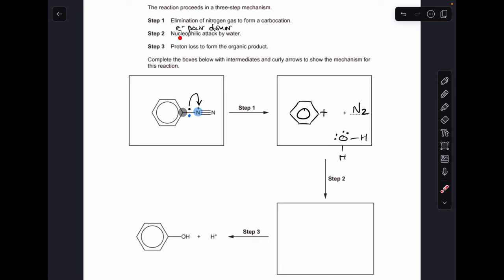Moving on to step 2, so it's nucleophilic attack by water. And there's just a reminder, nucleophile is an electron pair donor. So I've drawn a water molecule, shown both of its lone pairs. I only need one to show how it's going to act as a nucleophile. It's going to donate a pair of electrons to the C+, which generates that organic product there.